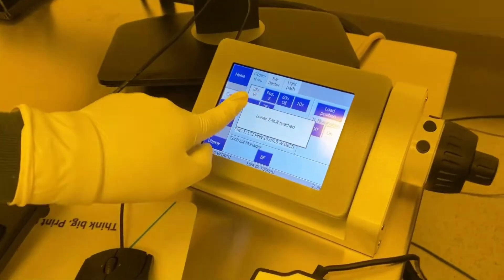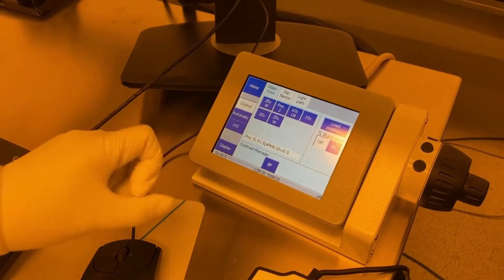Once the NanoScribe is set, go to the smaller screen right by the computer and pick which lens you will be using.